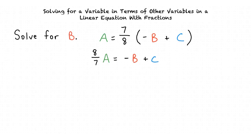The result is 8 sevenths times a equals negative b plus c. Remember that our goal is to isolate the variable b.